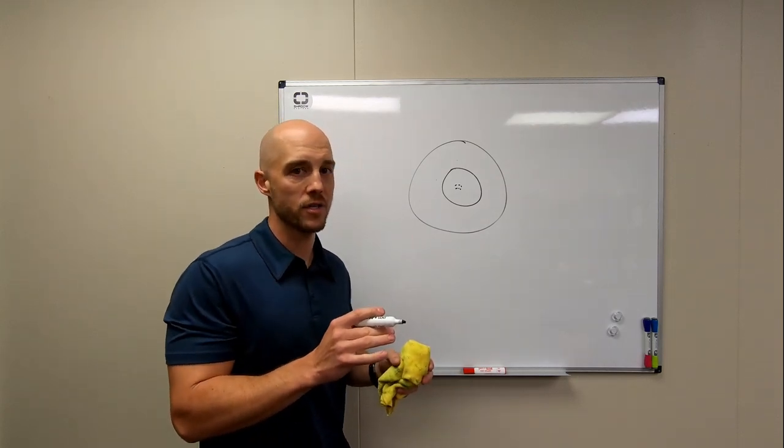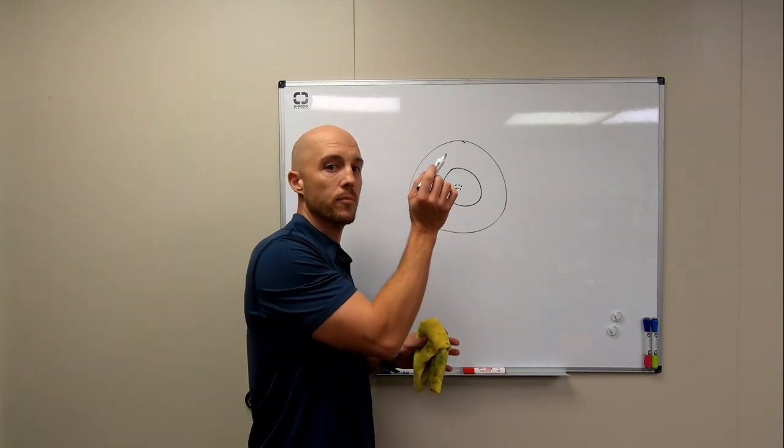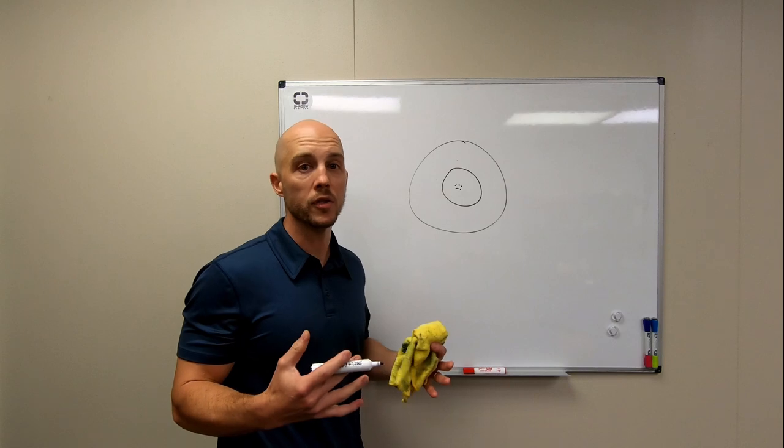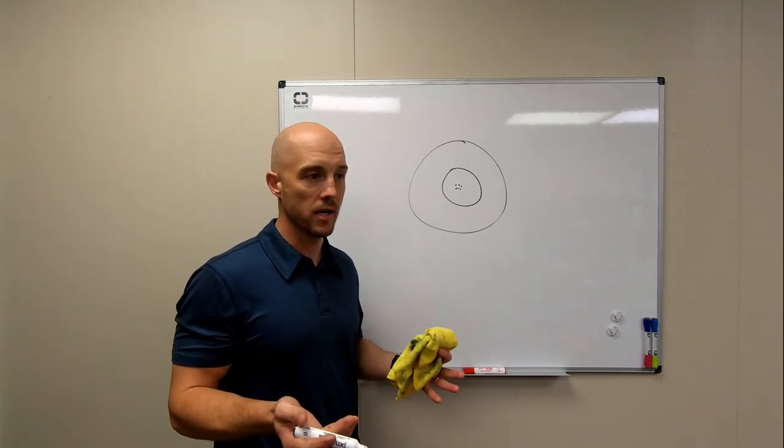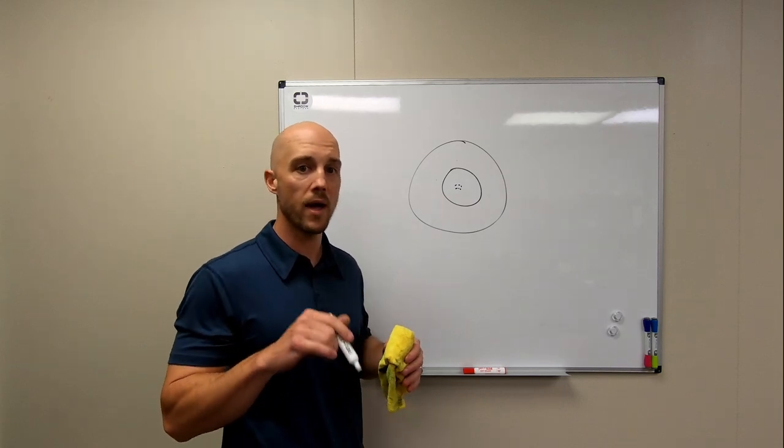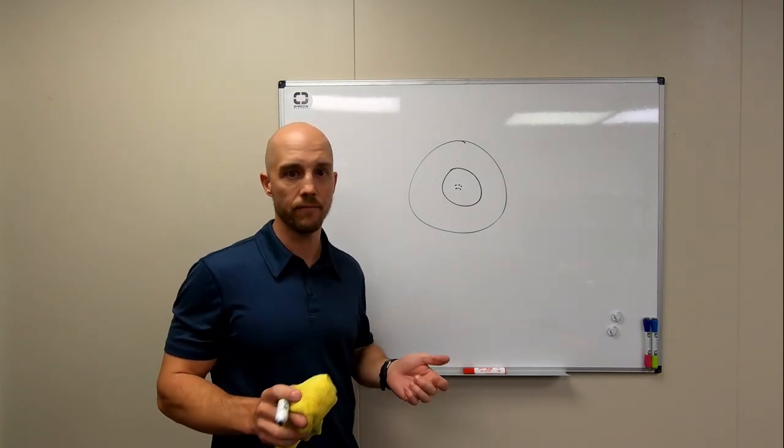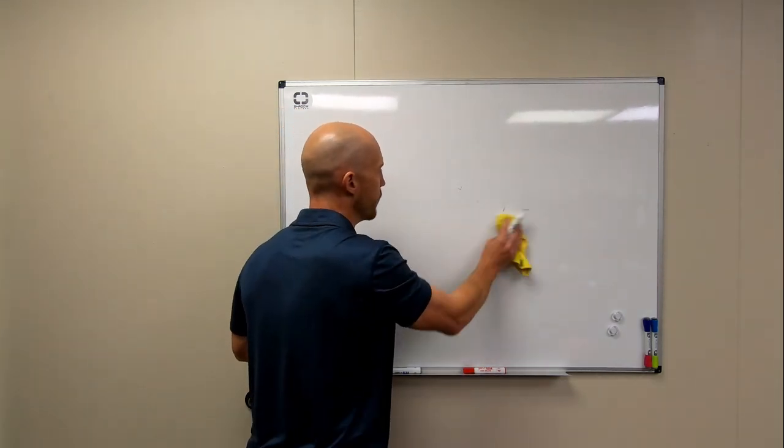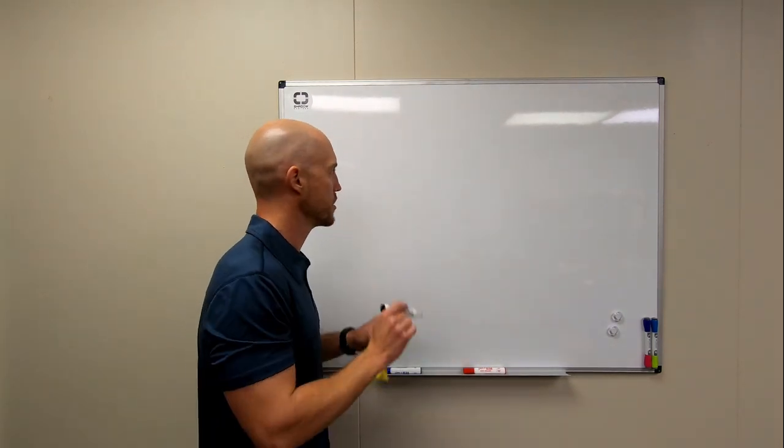So when I talk about accuracy, what I'm talking about is point of aim and point of impact matching. Precision should be built into the quality of the ammunition and the quality of the handgun. And so our guns are precise, the barrels lock up the same way, they'll put their rounds in the same place. You're asking, how do I hit the target? So we're going to talk about that. Accuracy. Precision is not really as relevant to this conversation.